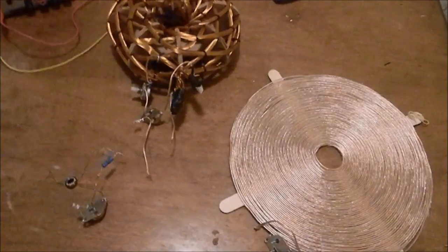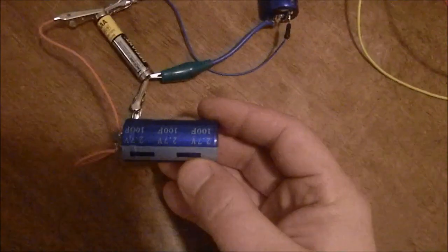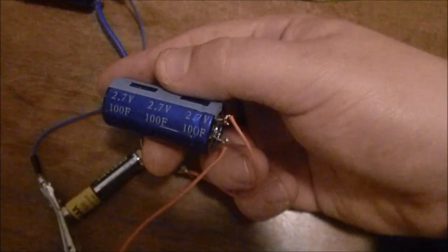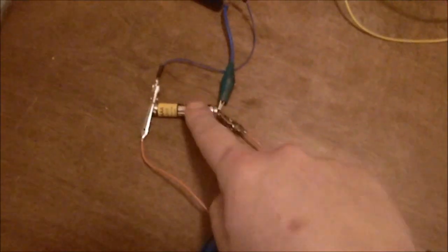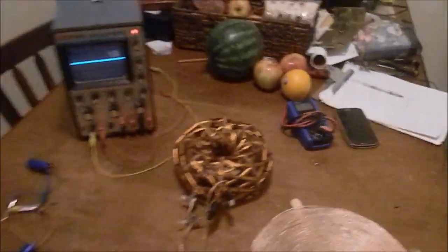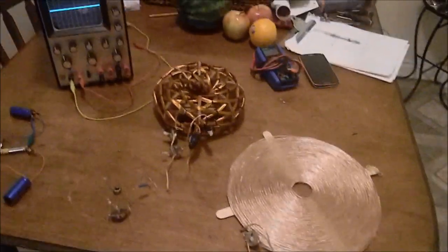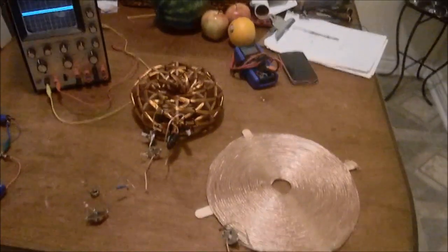What we're going to do is first analyze the waveforms. So we're just going to run them, look at the scope, and then after that using these super caps at 2.7 volts at 100 farad, I'm charging them with this little AAA battery and we're going to do run time comparisons between the standard, the pancake and the vortex coil and see if there's anything interesting there. Let's get to the first waveform analysis.